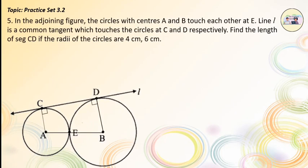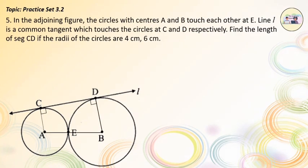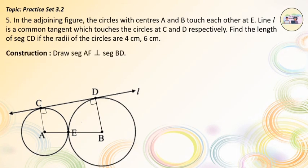Question No. 5. In the adjoining figure, the circles with centers A and B touch each other at E. Line L is a common tangent which touches the circles at C and D respectively. Find the length of seg CD if the radii of the circles are 4 cm and 6 cm. Construction: Draw seg AF perpendicular to seg BD.